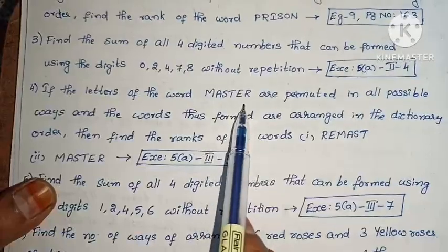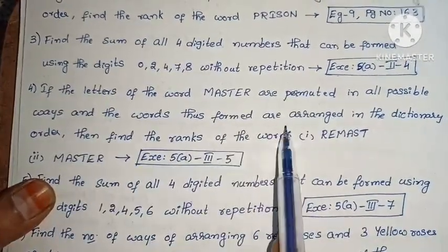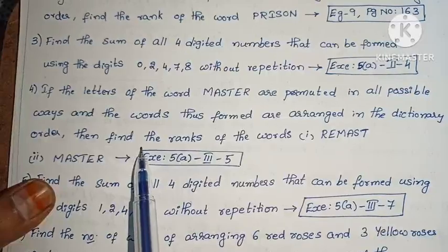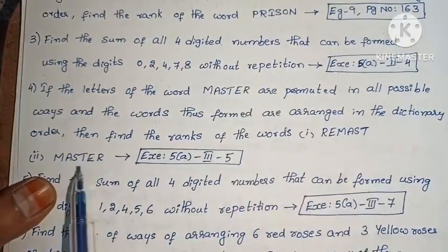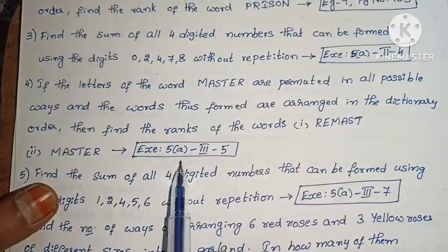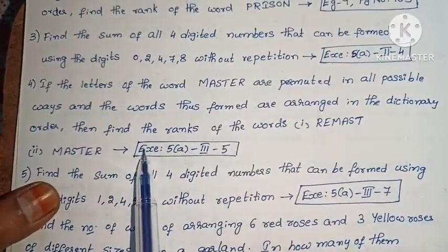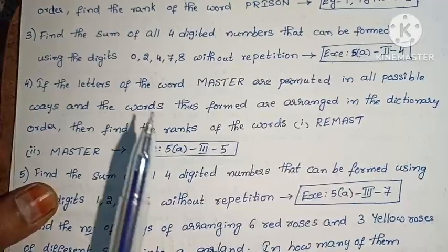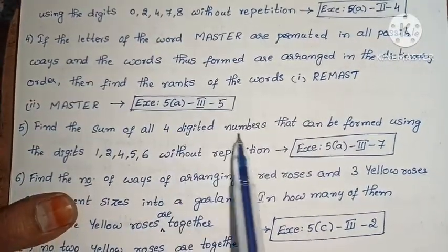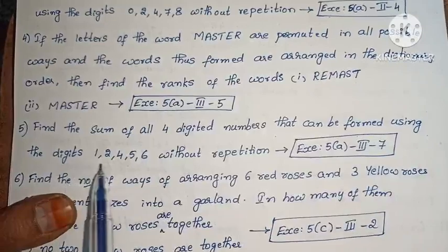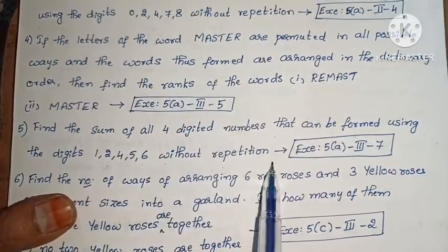Next: if the letters of the word MASTER are permuted in all possible ways and arranged in dictionary order, find the rank of the word MASTER (Exercise 5, Roman III, fifth one). This problem is very important. Next: find the sum of all 4-digit numbers that can be formed using the digits 1, 2, 4, 5, 6 without repetition (Exercise 5, Roman III, seventh one).